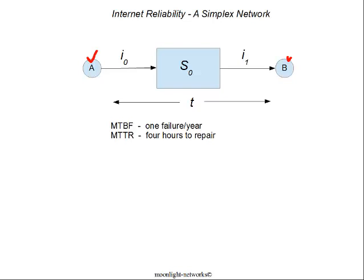We can characterize the performance of this system by two variables: the mean time between failure (MTBF) — how frequently the system fails — and the mean time to repair (MTTR) — how long it takes to recognize the failure, get someone on site, and restore service. Using four hours to repair as an example, which is consistent with industry estimates, if we fail once a year we're out of service for four hours in a year. Dividing that by the number of hours in a year and subtracting from one gives us an availability of 0.9995 — meaning that system will work when we want it to.